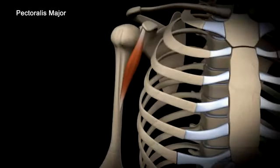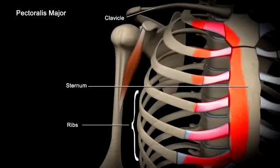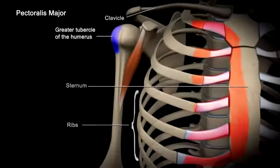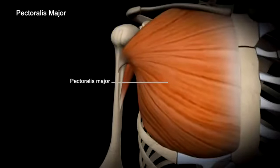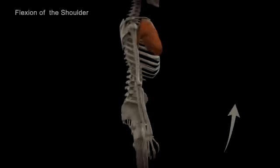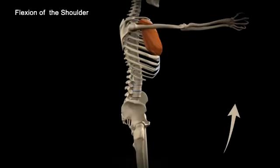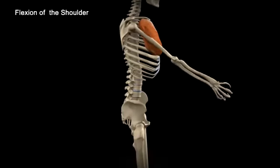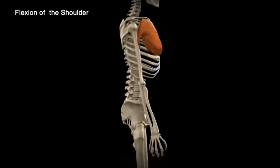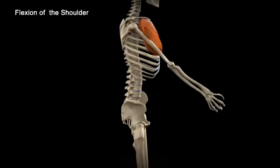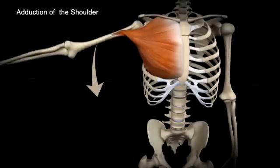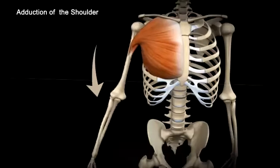The pectoralis major muscle originates at the clavicle, sternum, and ribs, and inserts on the lateral lip of the intertubercular sulcus, just below the greater tubercle. The coracobrachialis works with the pectoralis major muscle to flex the shoulder. They also act synergistically to adduct the shoulder.